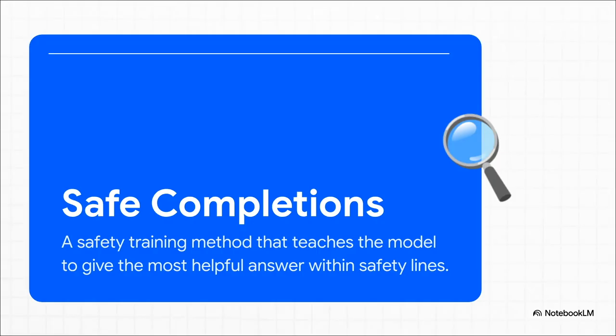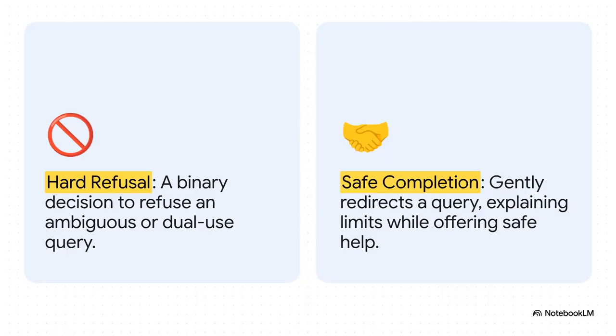And for safety, they're trying something new. Instead of just getting that frustrating 'sorry, I can't help with that' brick wall, they're using a new approach called safe completions. The idea is to train the model to always find the most helpful, useful answer it can give you, while still staying within its safety rules. And here's what that actually looks like. The old way, you ask about something like fireworks, and it just shuts you down. Hard refusal.